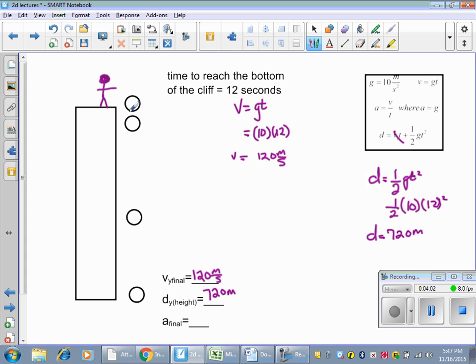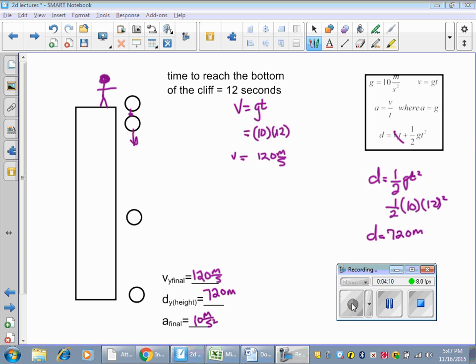And a_final, that's a trick question. Acceleration is always going to be 10 meters per second squared. Any questions about that, ask me. Now you should be ready to do the problems on the wall.